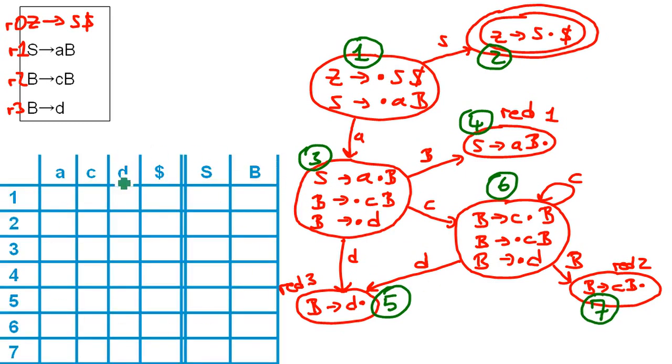And here's our parsing table. We have all our possible real inputs, the a, c, and d. And we have the end of input, the dollar sign. And we have the non-terminal symbols, the variable stuff, here on the right side.